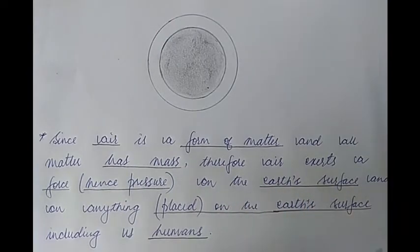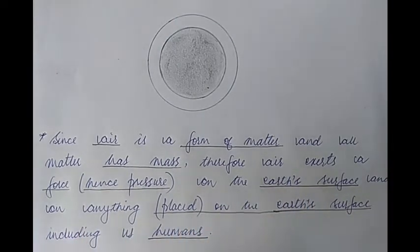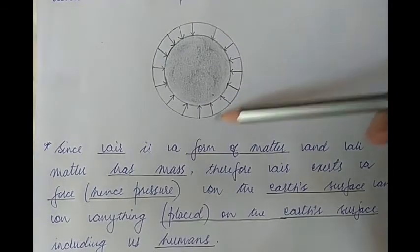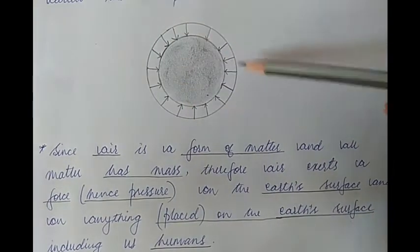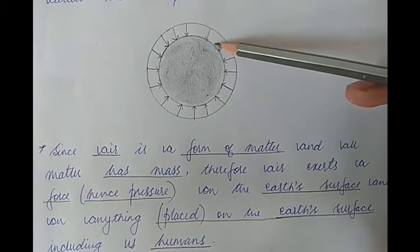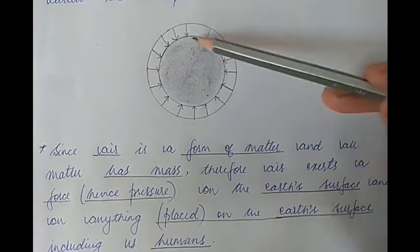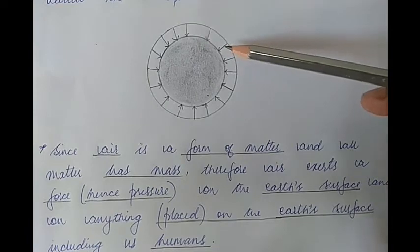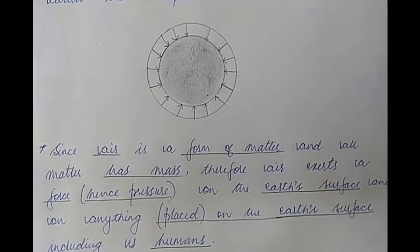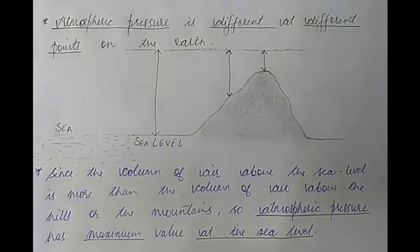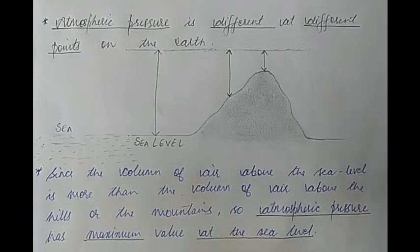Air exerts pressure on the earth's surface and on everything on it, including us humans. The atmosphere is exerting pressure at all points on the earth's surface, and this pressure is called atmospheric pressure. We've seen that the atmosphere exerts pressure at all points on the earth's surface, but the atmospheric pressure at different points is different.